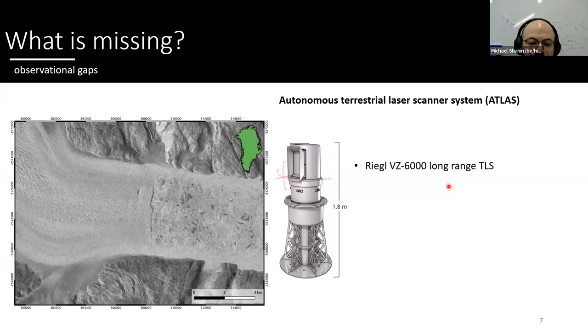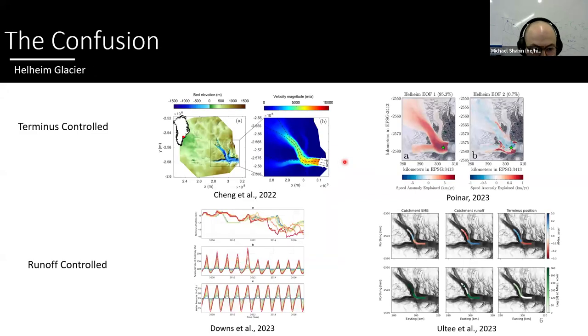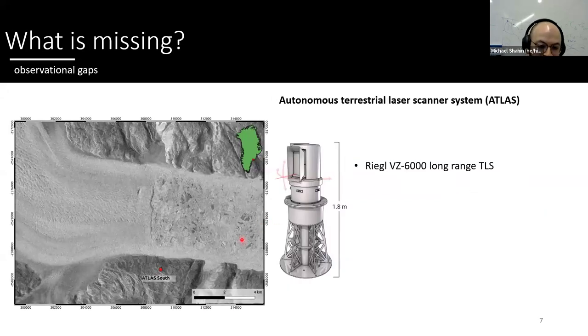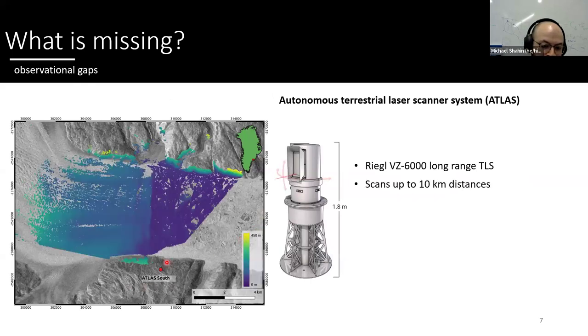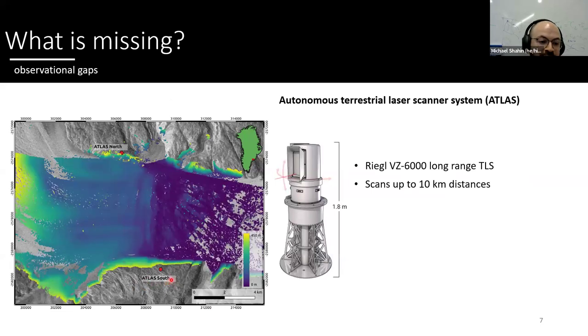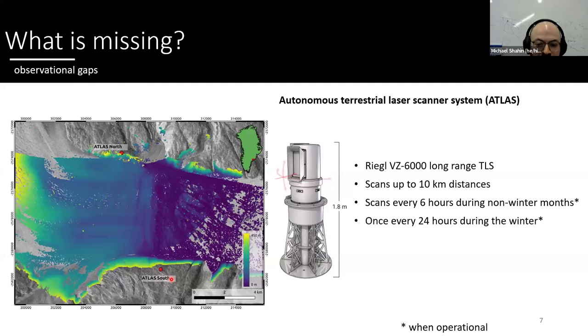So right, there has to be something missing when everyone's arguing about terminus control versus runoff control. And for my research, we installed autonomous terrestrial laser scanners, also known as Atlas. And these are TLSs. And they scan about 10 kilometer distances. And we installed Atlas South in 2015 and Atlas North in 2018. And they scan every six hours during non-winter months, and once a day during the winter, when operational, because when you go to Greenland, it's really hard to maintain systems that just operate year round.